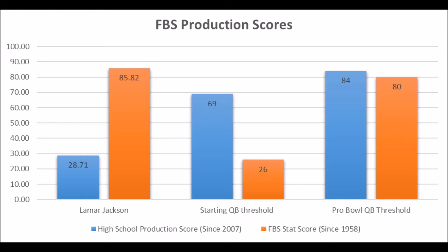When it comes to Lamar Jackson's data, he has only one real issue, and that is his high school production data. He had a 28.71 out of 100, which does not meet the minimum threshold for long-term starting quarterbacks since the 2007 NFL Draft class, nor does it meet the Pro Bowl threshold of 84 or higher. Pro Bowl quarterbacks in that time span include guys like Matt Ryan, Cam Newton, Russell Wilson, Andrew Luck, and Derek Carr. So the big issue with Lamar Jackson is just his high school production score.